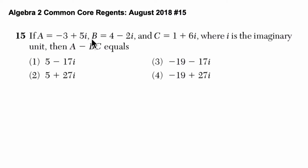We're told here that A is a complex number, so is B and so is C. i is imaginary, and they want to know what A minus BC equals. So I'm going to set that up: A minus B times C.